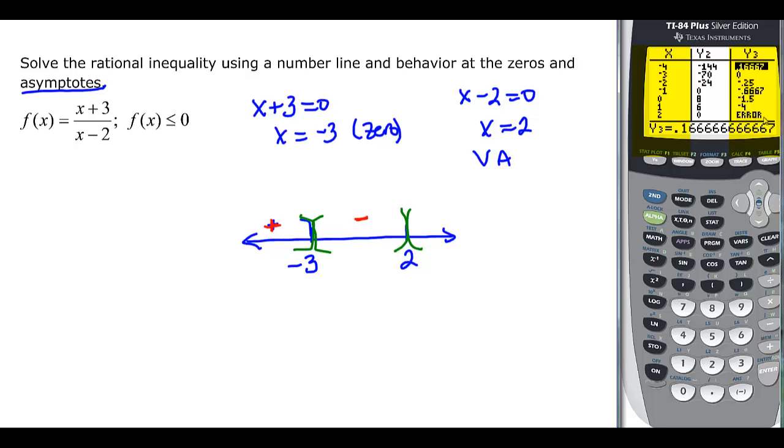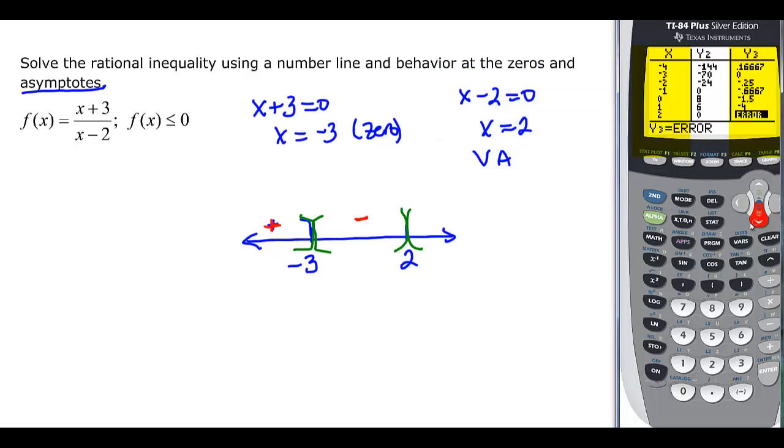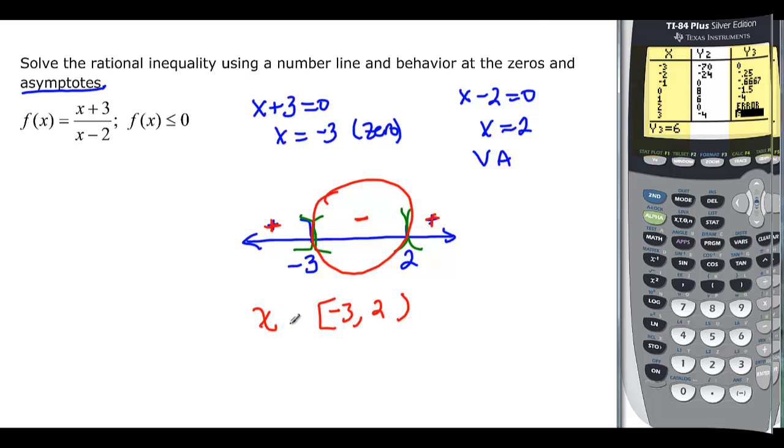And then I get the error. Notice you have an error there. Because that's my vertical asymptote. And then if I go below that, I'm going to have a positive again. So I try 3. And it gives me a positive value. Then we look and say we want it to be less than or equal to 0. So that's going to be in here. And use what we have on our number line. A bracket and a parenthesis. Negative 3 goes here. 2 goes here. And x is an element of that.